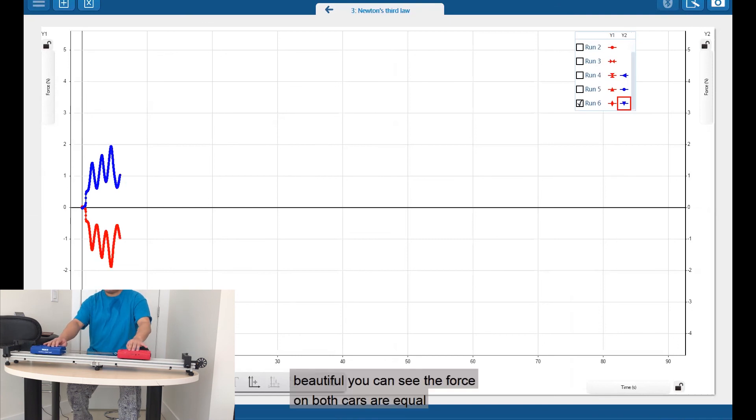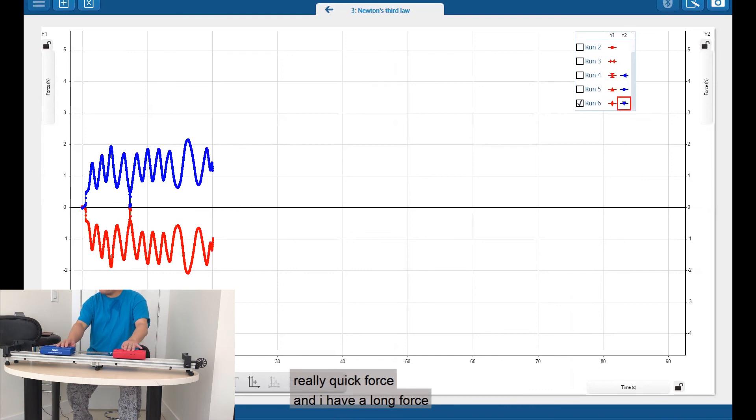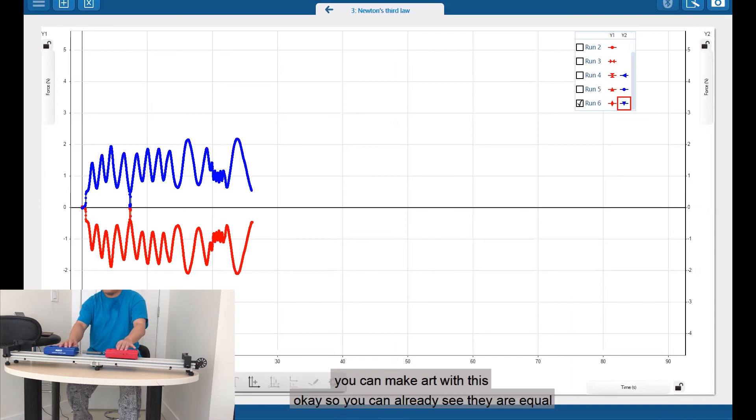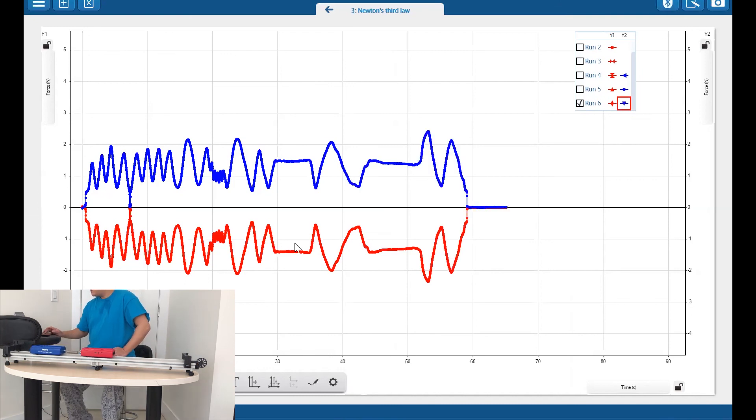You can see the force on both cards are equal, but opposite. They're almost symmetric about the x-axis, right? So I can have really quick force and I have a long force. You can actually make art with this. So you can already see they're equal in magnitude, but opposite in directions. So the forces are equal in magnitude, but opposite in directions.